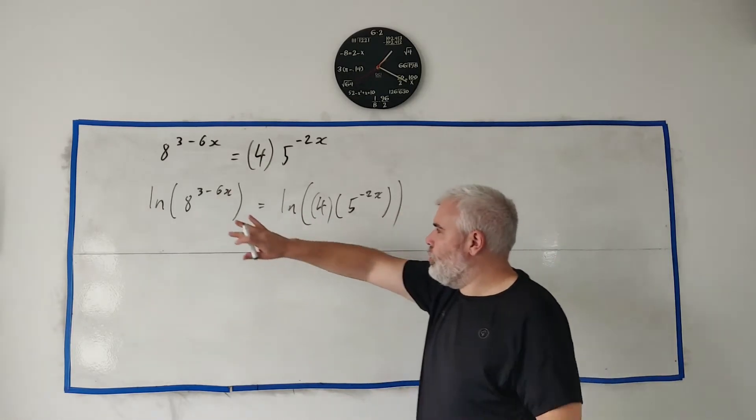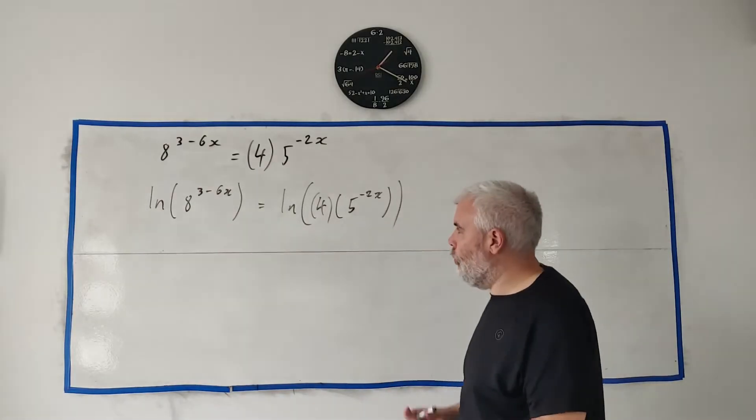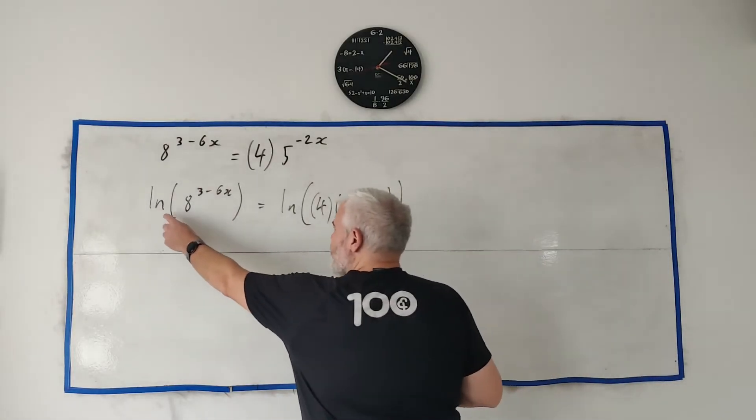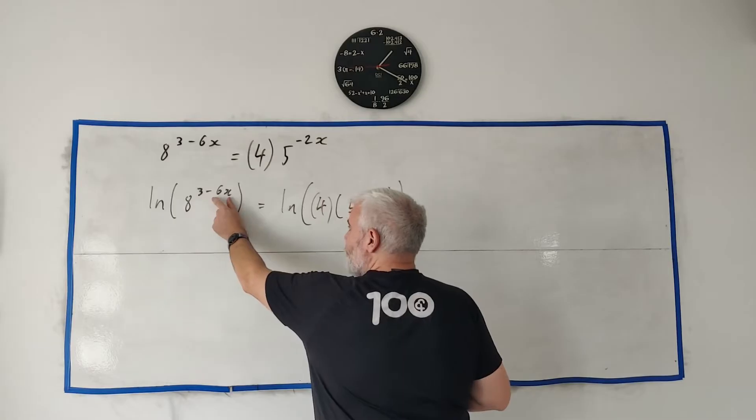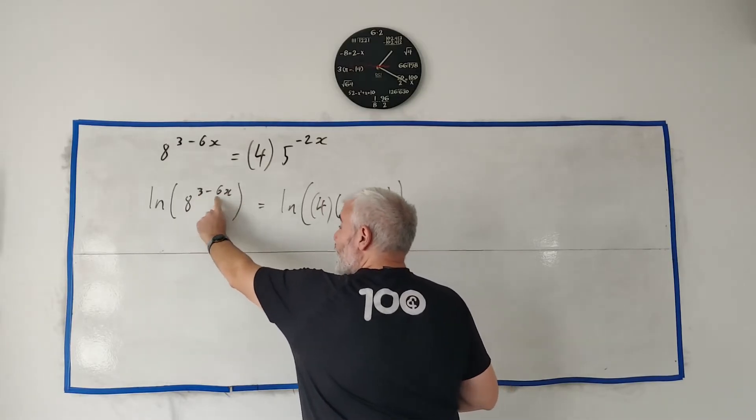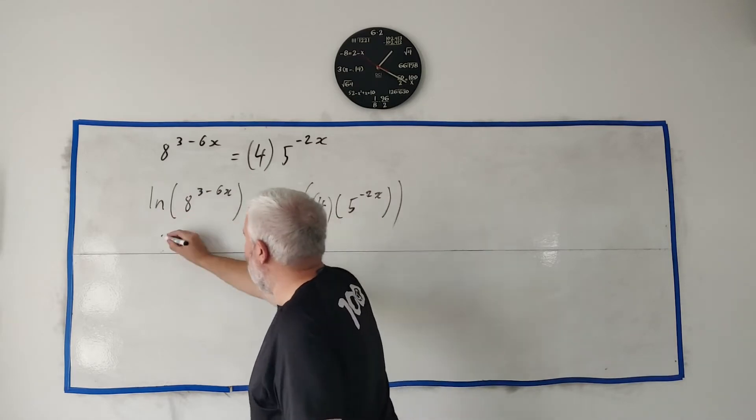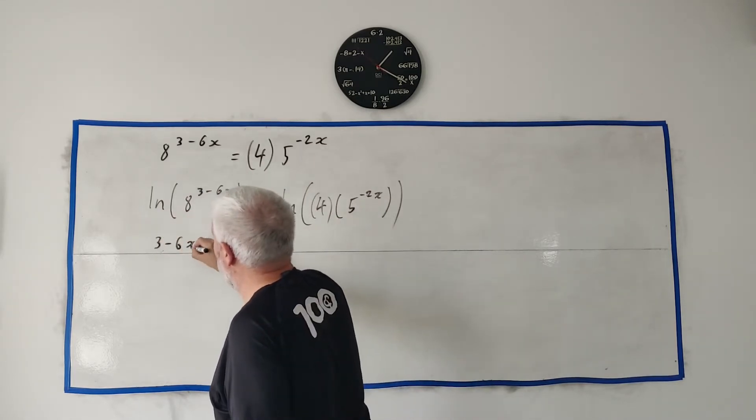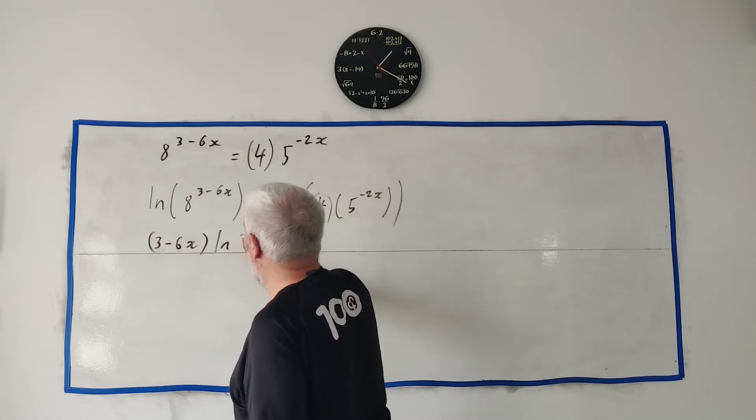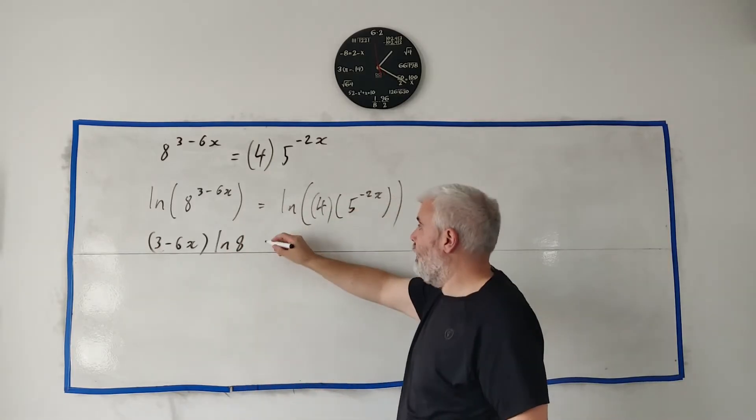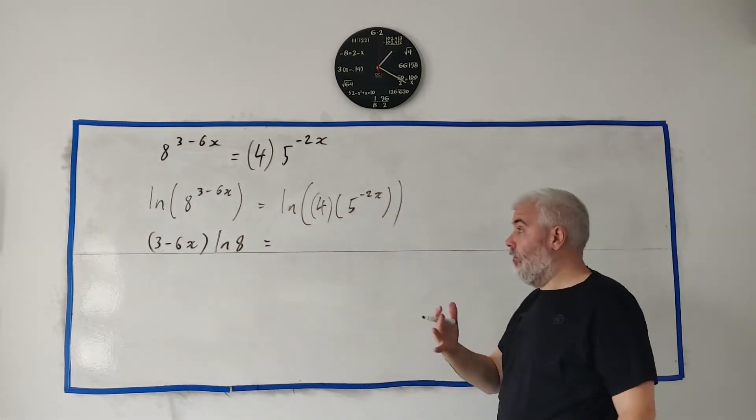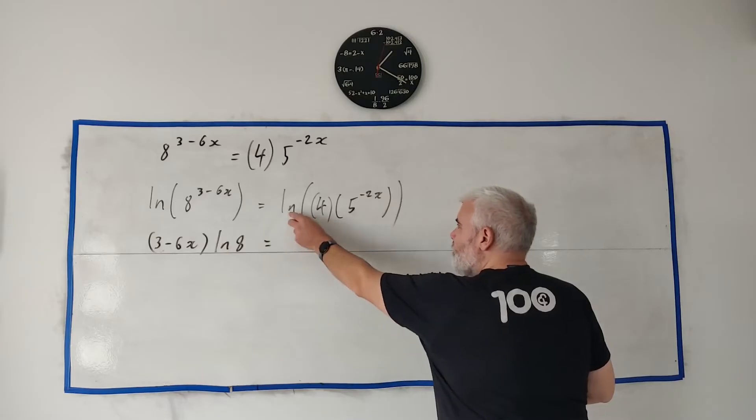Actually let's use two of the rules of logs. One of them says the log of something to the power of something, we can take this power up here and multiply it. So we can turn this side into (3-6x) multiplied by the natural log of 8. That's one thing we can do. Another rule of logs says anytime you have the log of two things multiplying...